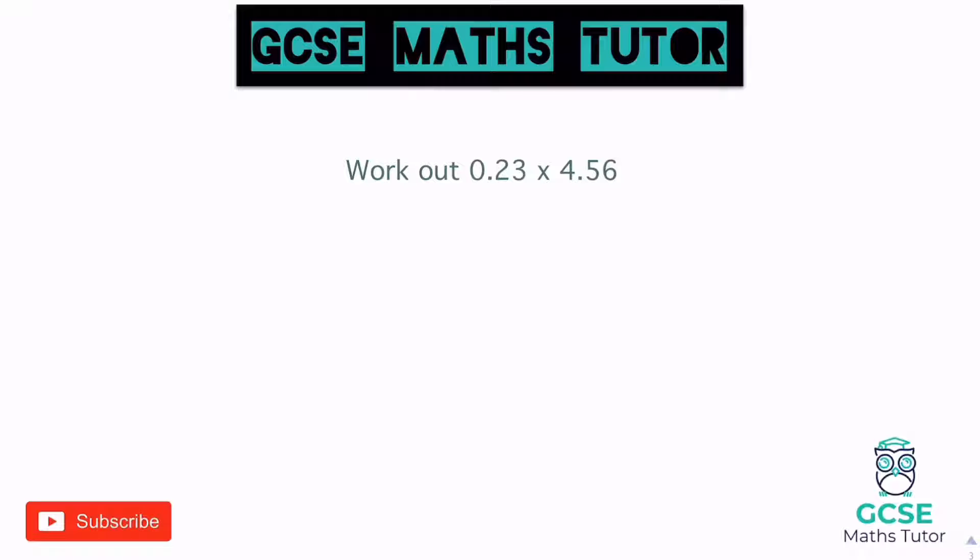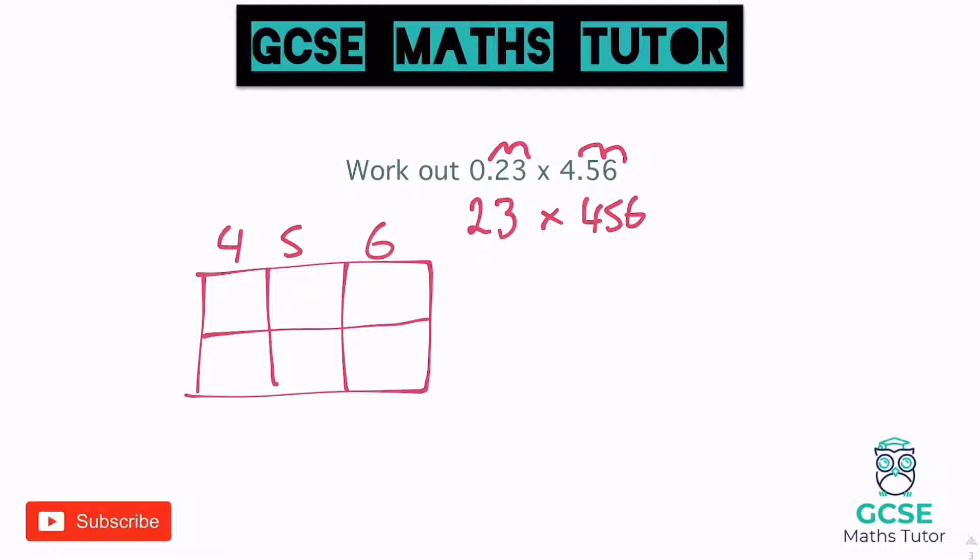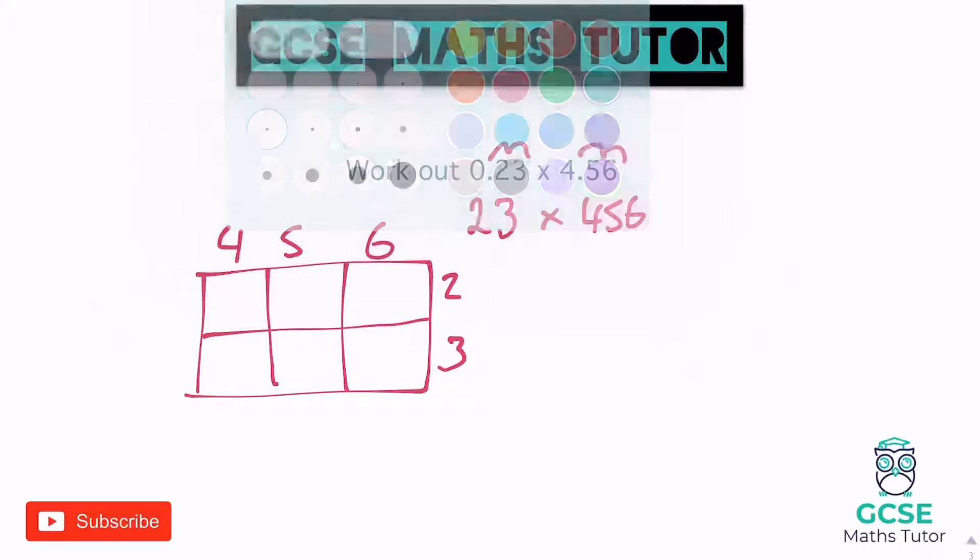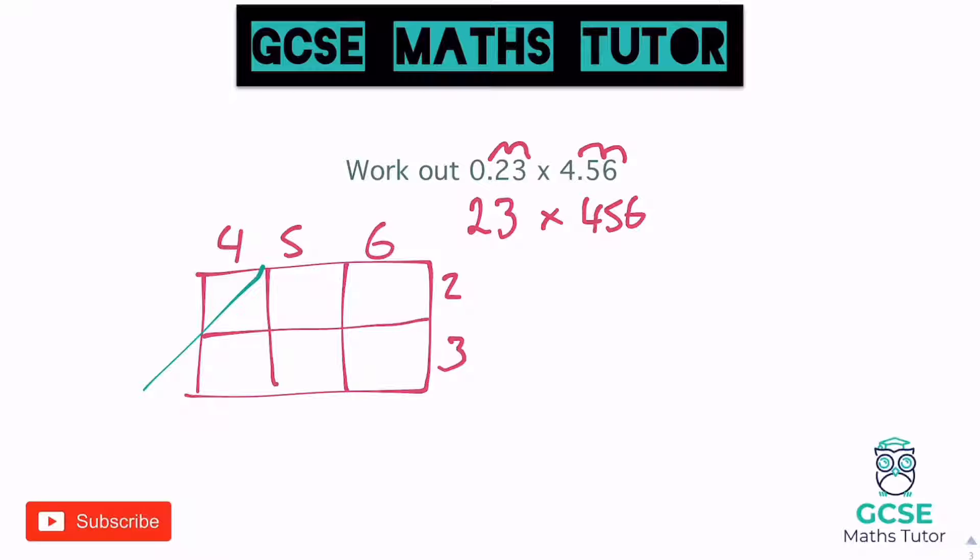Okay, so 0.23 times 4.56. So we've got quite a lot of hops here, quite a lot of decimal movements in this initial stage. So we've got to hop that out twice to make it 23. And we'd have to hop this out twice as well to make it 456. So we've got a similar grid, a similar lattice to what we did on the last one. We're going to have three numbers along the top or down the side, it's up to you. And two down the side. So let's have a look. 456 times 23. Okay, there we go. Let's draw these in.